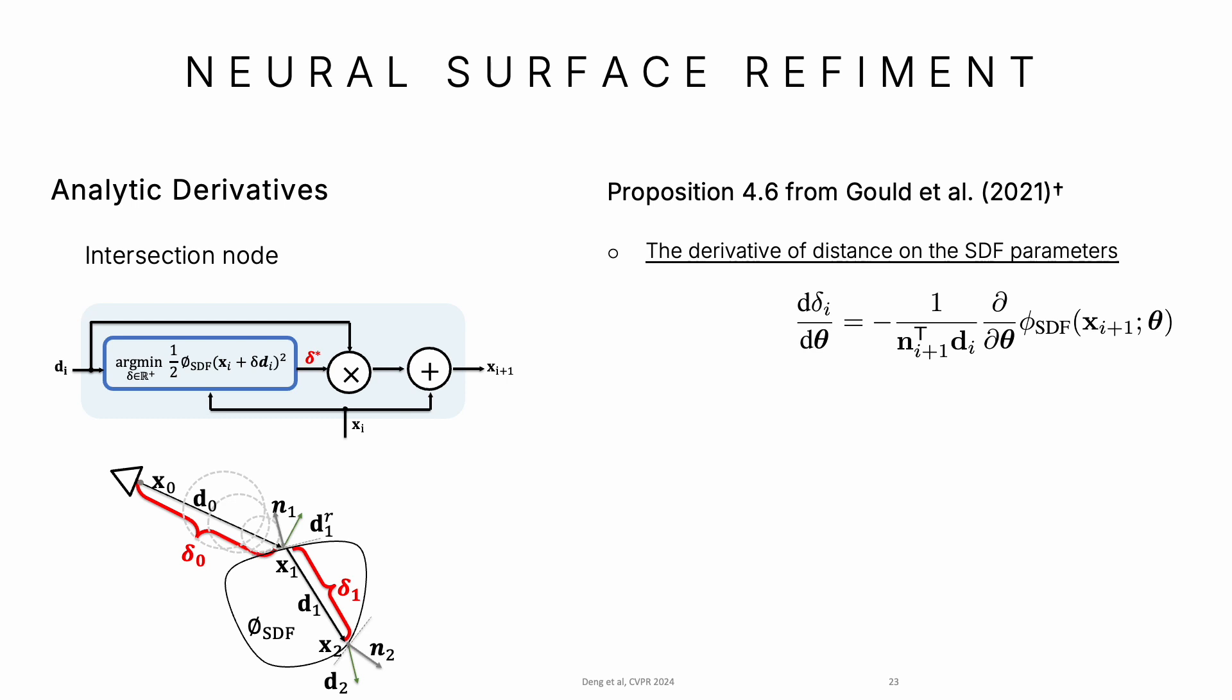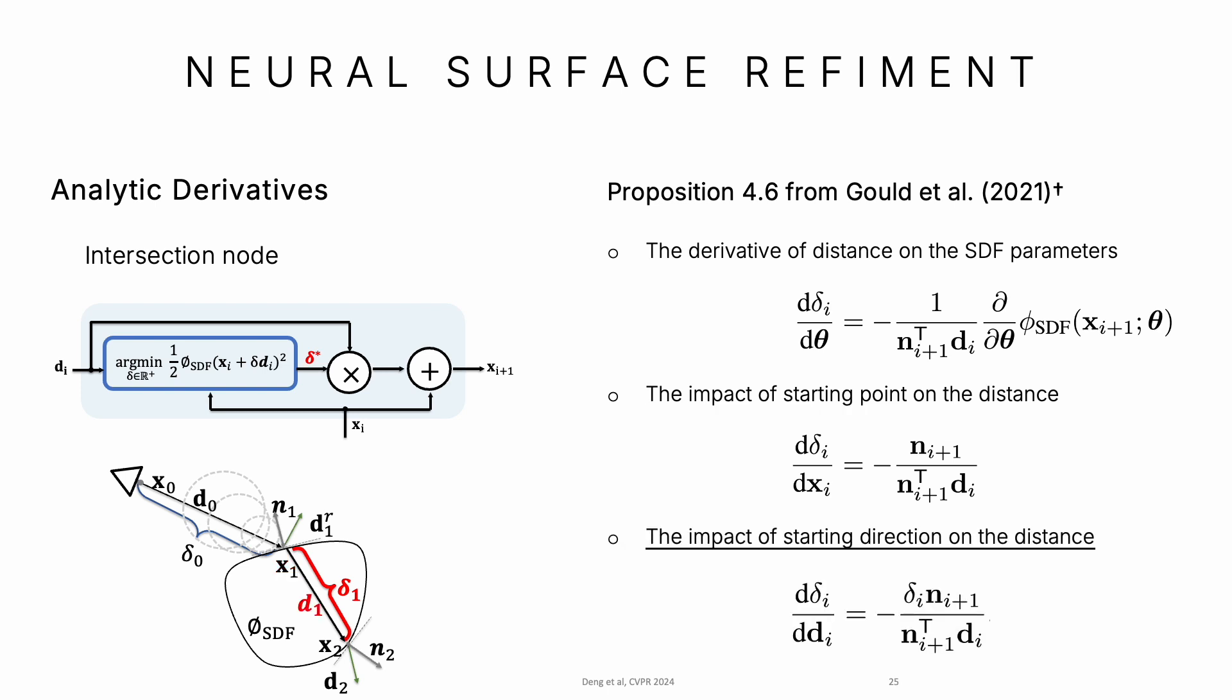First, the derivative of distance δ with respect to the SDF parameters. Second, the impact of the starting point on distance δ. Third, the impact of the starting direction on δ.